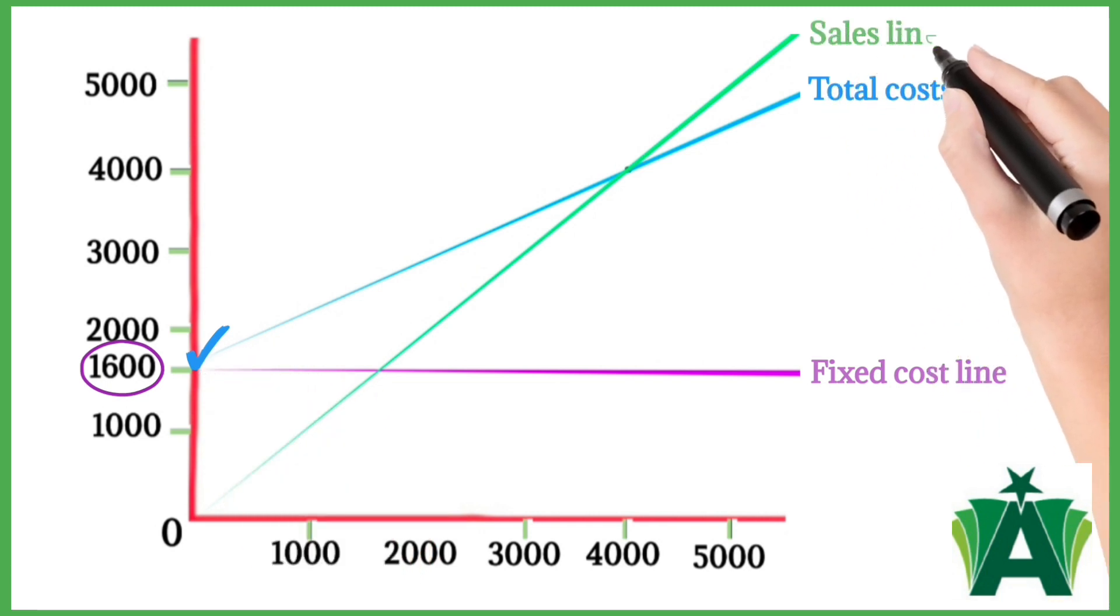The sales line is drawn from the zero point at the left to the 5,000 point on the right y-axis.